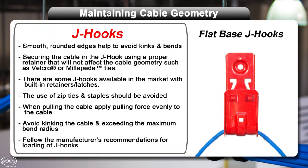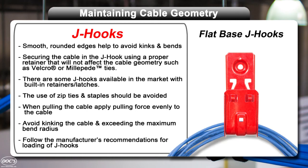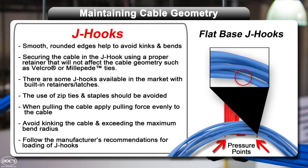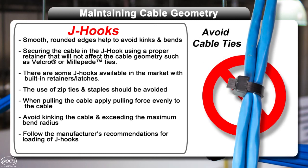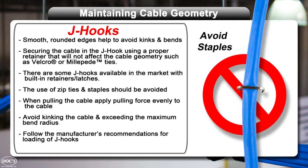A cable support with a flat base tends to cause an abrupt bend compared to a hook with a beveled or rounded base. A flat-based hook can create pressure points that can change the geometry of the cable. This is easier to see with a single cable versus a bundle of cables, but the pressure point is always there. When you bundle cables together, they have an inherent stiffness that tends to prevent tight turns, but not these pressure points. Avoid situations that tend to kink or change the geometry of the cable, such as tightly cinched cable ties, staples, or knots.